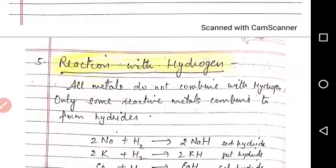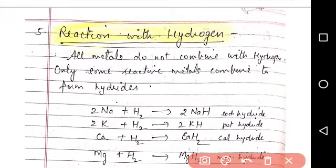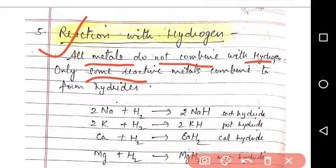Next reaction is reaction with hydrogen. Reaction with hydrogen, all metals do not combine with hydrogen. Only some of the reactive metals combine to form hydrides. For example, Na plus H2, sodium plus hydrogen forms sodium hydride. Potassium plus hydrogen forms potassium hydride.